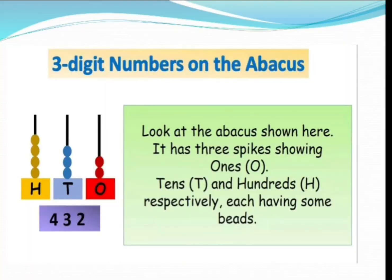Abhi hum 3 digit numbers on the abacus karenge. Students, 3 digit numbers on the abacus me, 3 spikes hoti hai, 3 rods hoti hai. Aapko picture mein dekhi hogi, 3 rods hai, 1 hai 100 ki rod matlab H, 1 hai 10s ki rod matlab T, 1 hai 1s ki rod matlab O. So yahan kya likha hai students, look at the abacus, abacus pe dekho, it has 3 spikes, 3 rods hai na abacus pe. Abhi hum hain padi thi, 100, 10s, 1s.